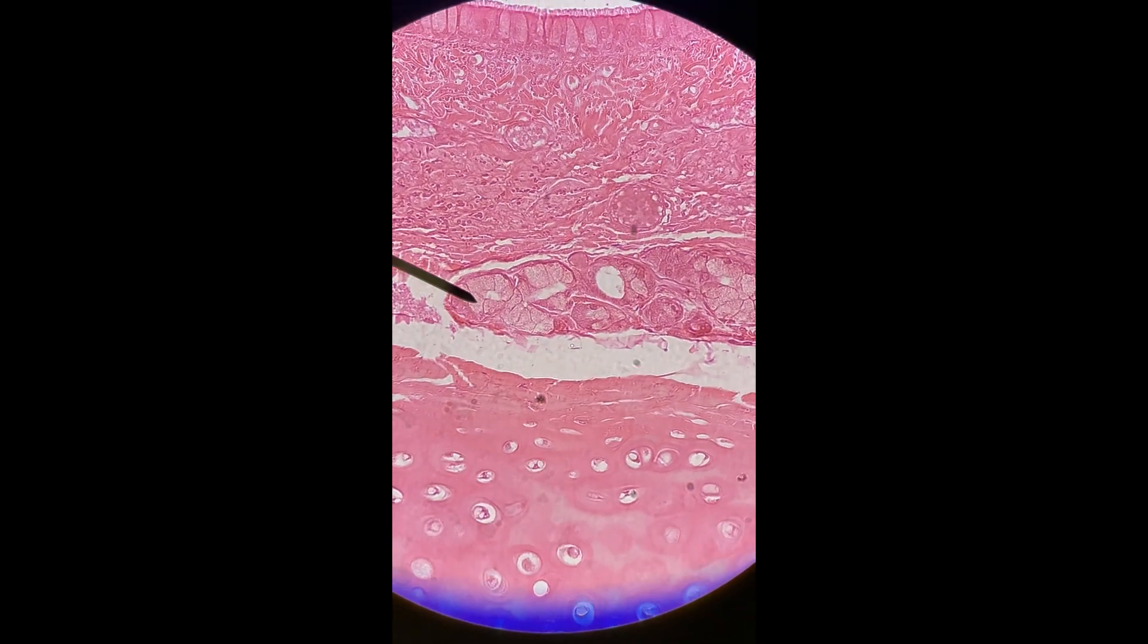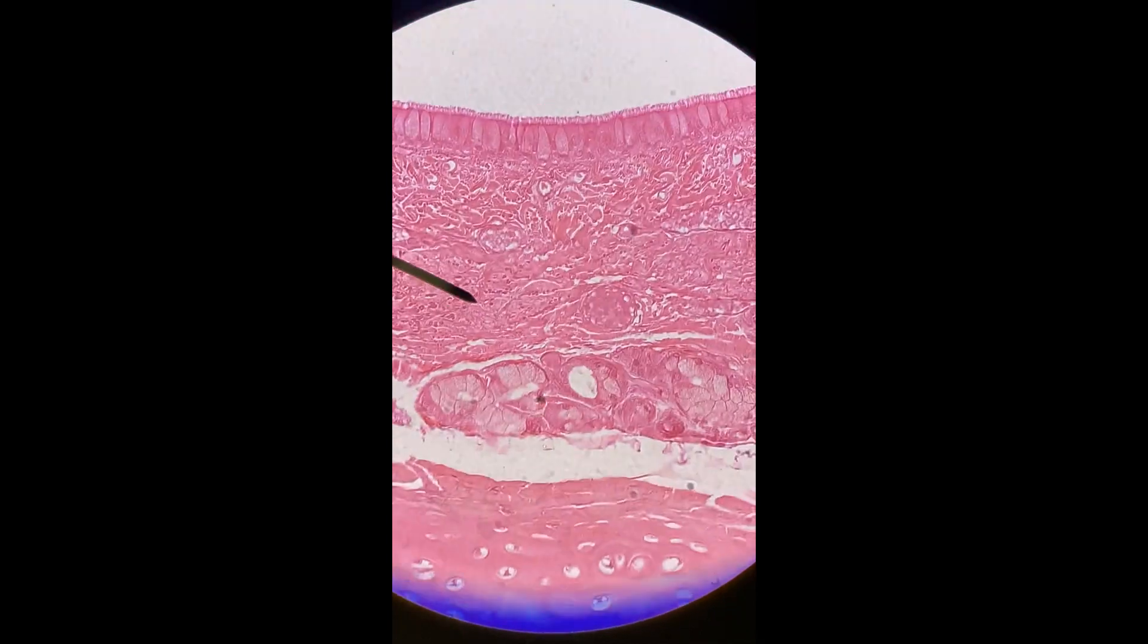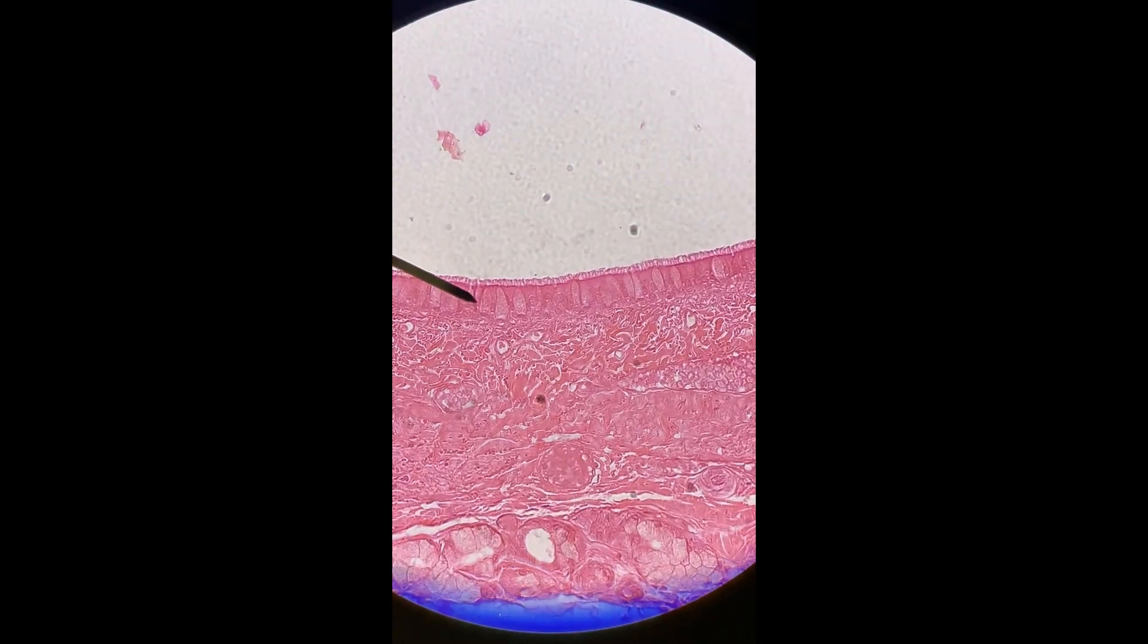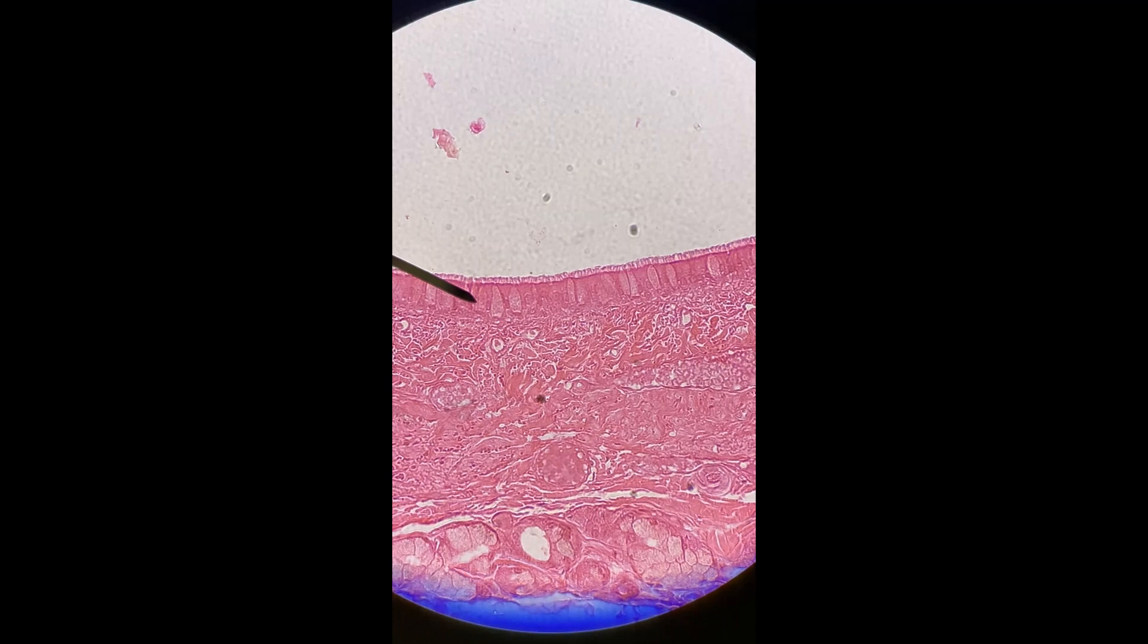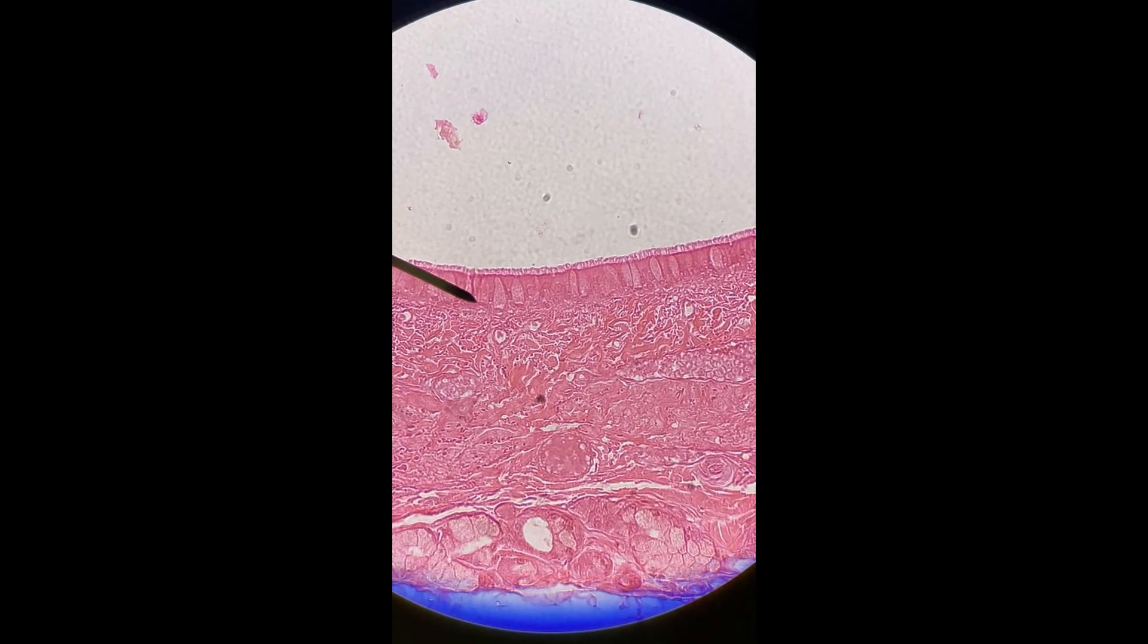These are in the bottom of that mucosa, and then these goblet cells up here are in the actual epithelium. So those are the two different kinds of glands you find. Let's go one more time from the top.